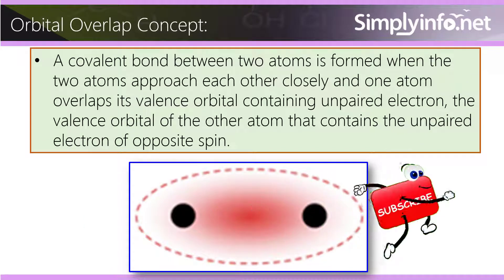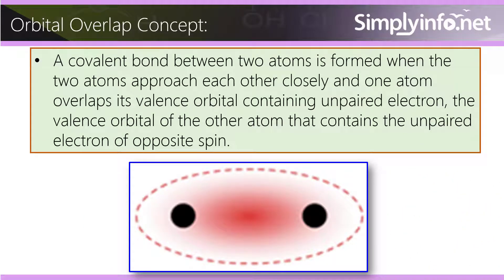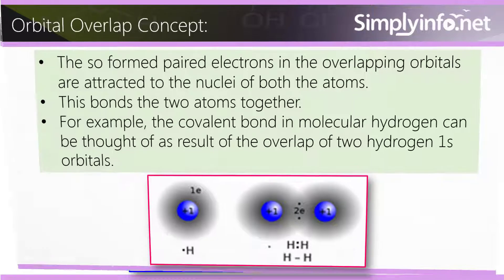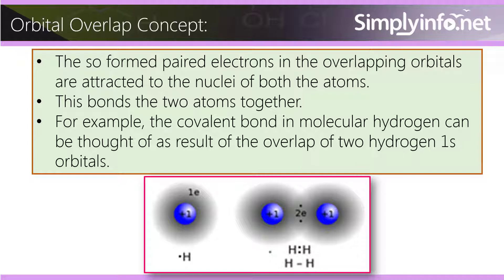Orbital Overlap Concept: A covalent bond between two atoms is formed when the two atoms approach each other closely and one atom overlaps its valence orbital containing an unpaired electron with the valence orbital of the other atom that contains an unpaired electron of opposite spin. The paired electrons in the overlapping orbitals are attracted to the nuclei of both atoms, bonding the two atoms together.